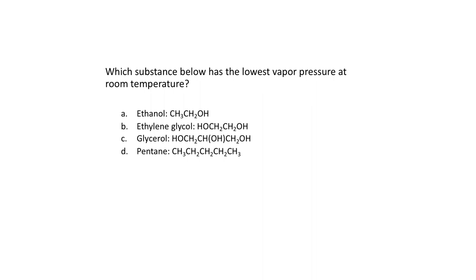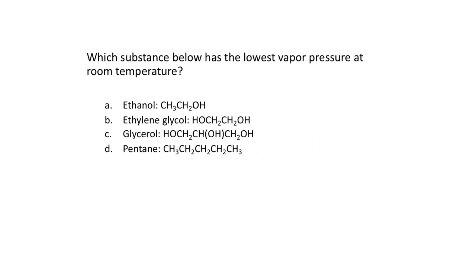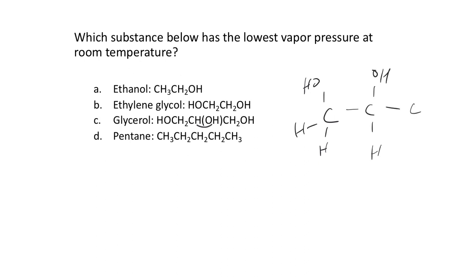Which compound has the lowest vapor pressure at room temperature? We're comparing ethanol, ethylene glycol, glycerol, and pentane. Glycerol is like ethanol but on a propane chain with a third hydroxyl group — the structure has an OH group, then carbon-hydrogen, then another OH group, then CH2.